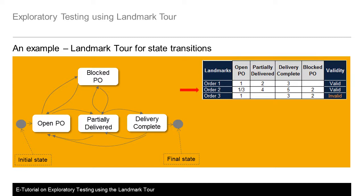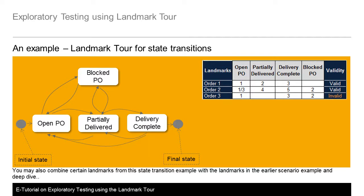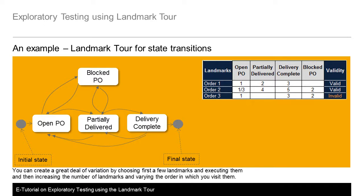You might treat each of these states as landmarks and execute the landmark tour as in the previous example. Order 2 is an interesting variation of order 1, wherein an open PO is blocked first, then unblocked, and then follows the same routine as order 1. Order 3 is not valid — you should not be able to receive any goods against a blocked PO, but you may still want to execute this order. You may also combine certain landmarks from the state transition example with those from the earlier scenario and deep dive. A great deal of variation can be created by choosing a few landmarks first, then increasing the number and varying the order in which you visit them.